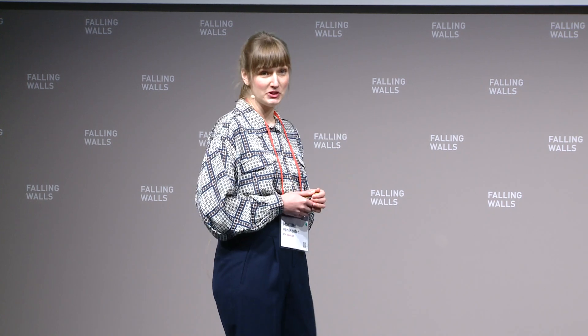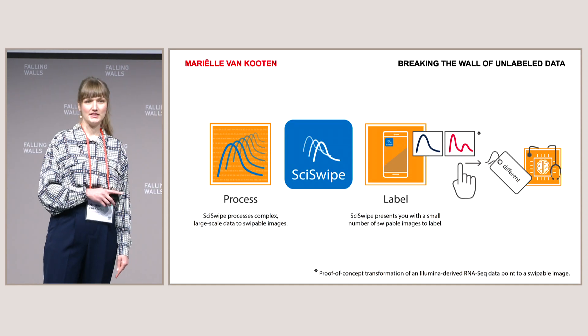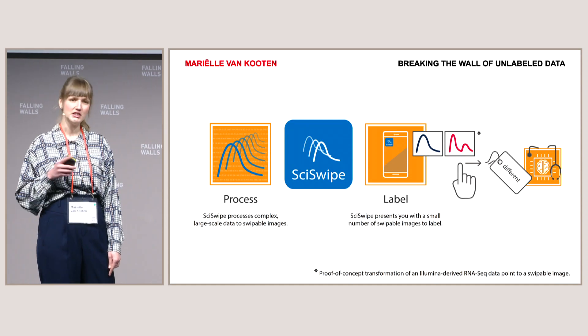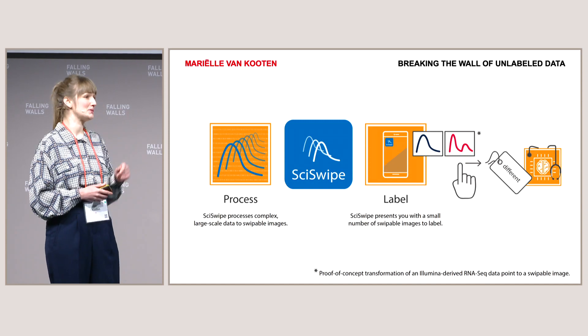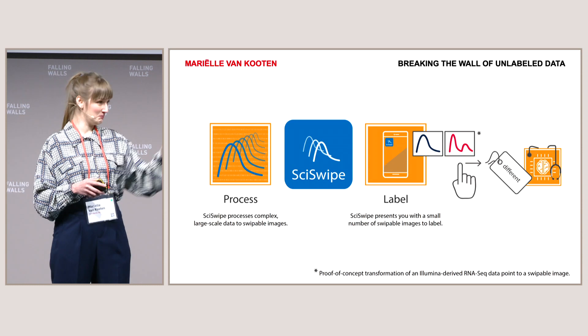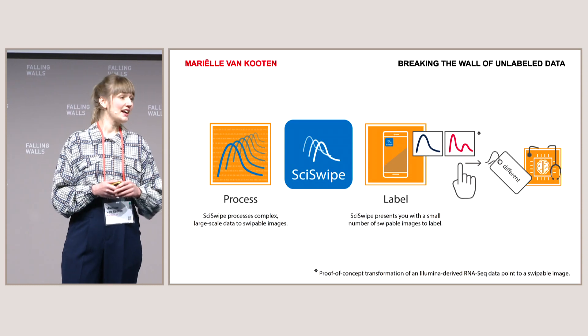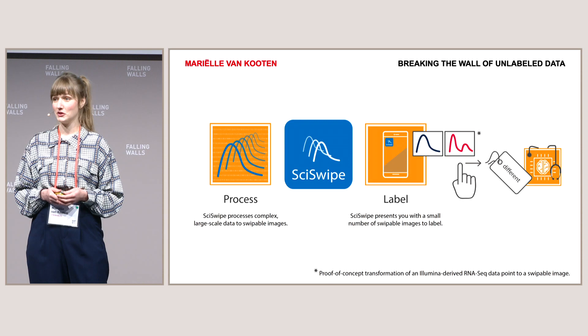Problem number two: complex data is very far off from traffic lights or giraffes. The dedicated app SciSwipe helps scientists in the processing of complex data to swipeable images and distributes these images to the public. These are some sexy curves. Every single person in this room can help train a computer by swiping a small number of such images on a smartphone.